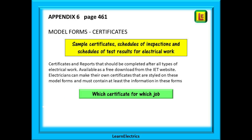Appendix 6 is all about model forms — the certificates, the reports and test schedules that we complete after each job. The appendix will tell you which certificate to use for each type of work activity, and do expect a question on these. As a business you can produce your own certificates with your own logos etc., but they must contain at least the information in the model forms.